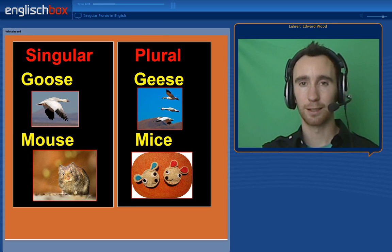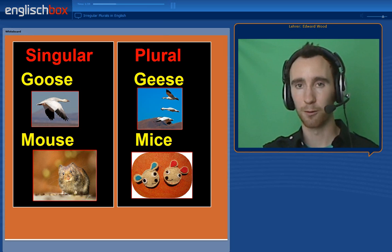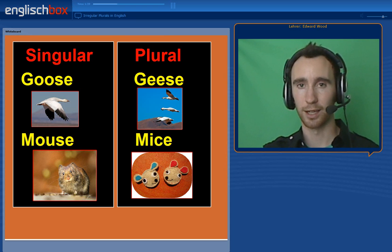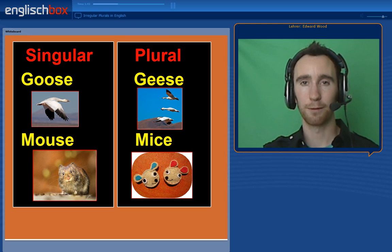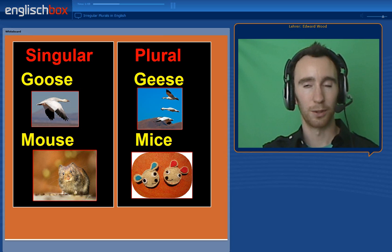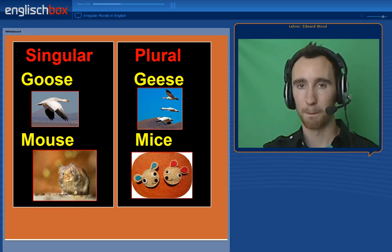For many different kinds of animals, we also have irregular plurals. Following a similar rule to tooth/teeth and foot/feet, we also have goose and geese — one goose, two geese. We also say one mouse and a group of mice.